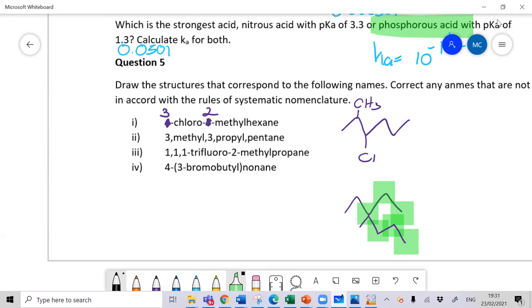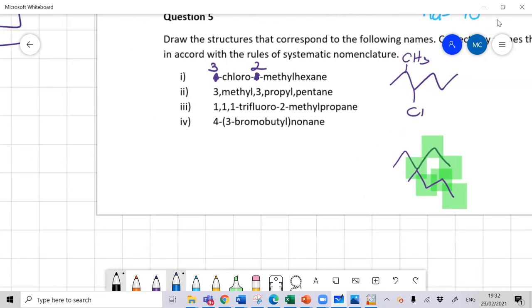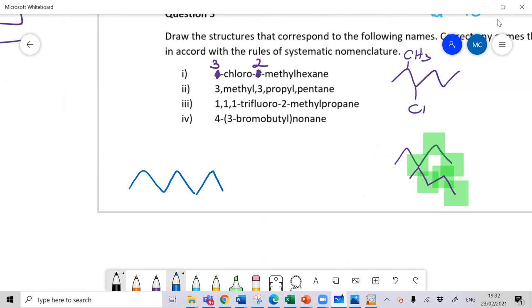1-1-1-3-fluoro-2-methyl-propane, there was nothing wrong with the naming. And 4-3-bromobutyl-nonane as well. There was, because this would be a decane. Again, this would be 10 carbons long, the longest chain. So this in reality should have been 2-bromo 5-propyl decane. Again, if you are unsure about the name, go to something like this, draw the structure, and see what name you get.